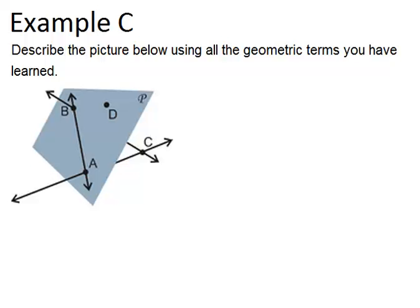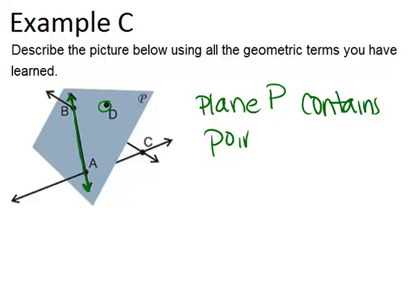So for example, I see plane P and plane P contains point D and also line AB. So you could say that. Plane P contains point D and line AB.